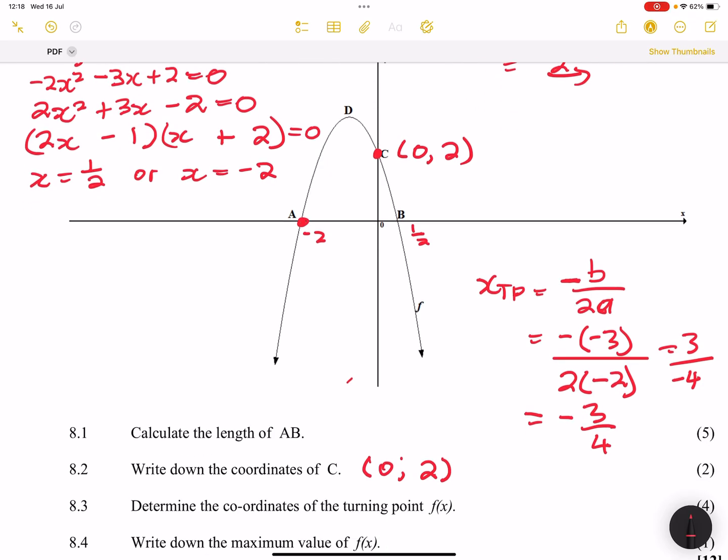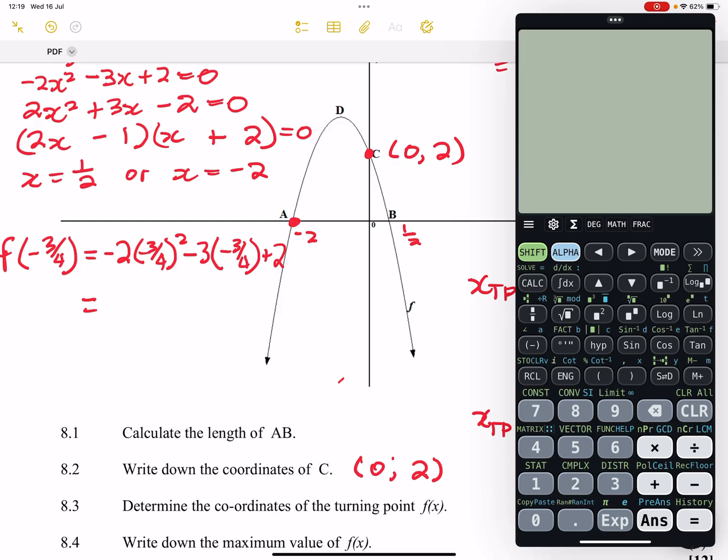Now we're looking for the coordinates. So we know the x value of the turning point is going to be -3/4. But what would be the y value? So the y value, what we are simply going to do is we are going to substitute -3/4 into that equation, the original equation. So -2 times 3/4, -3/4 squared, -3 times -3/4, that's plus 2.